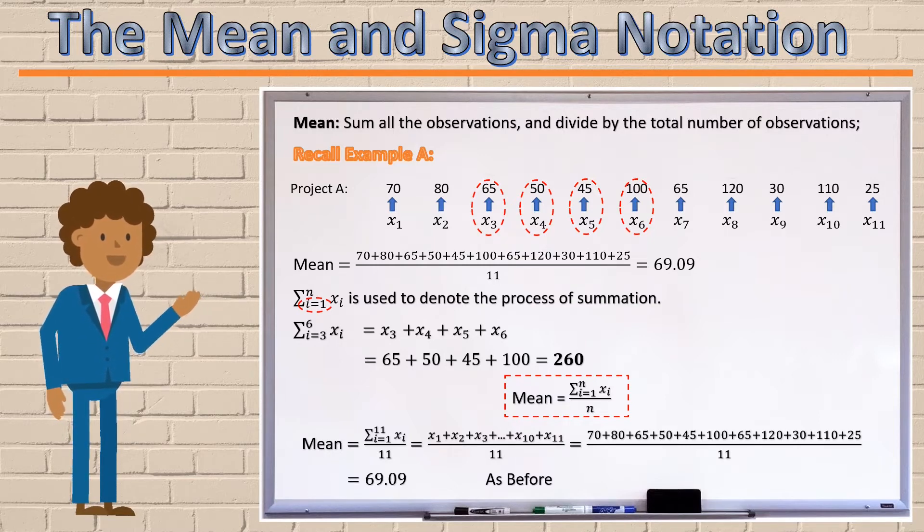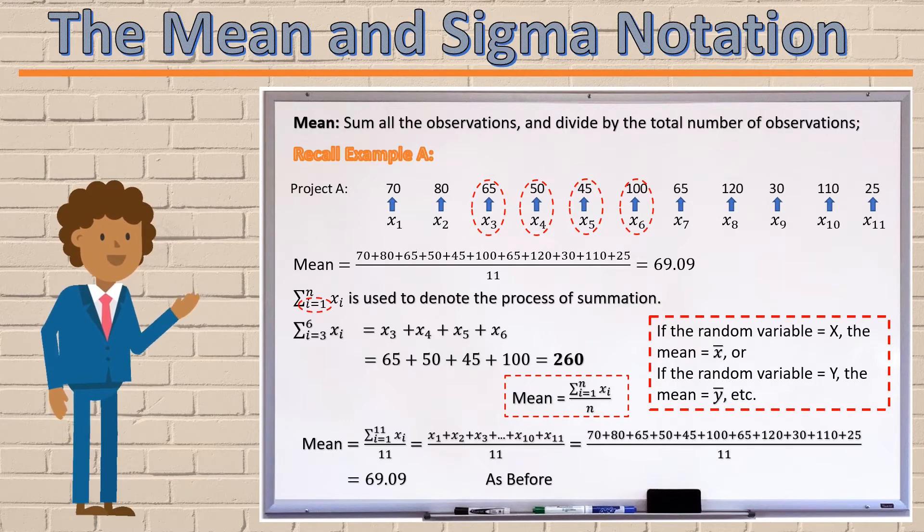If our random variable is denoted by capital X, then the mean of our data set would be denoted by x with a line above it called x bar. If the random variable is denoted by y, the mean of the data set would be denoted by y bar, and so on. So you'd just take the lowercase letter of your random variable and just put a dash above it, and you'd call it that letter bar. Other important uses of sigma notation would be covered in the following chapter.